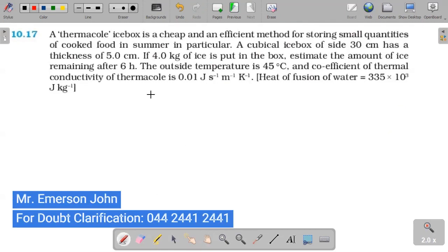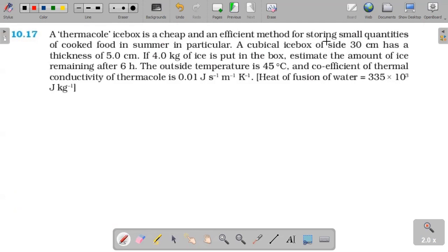Thermocole icebox is a cheap and an efficient method of storing small quantity of cooked food in summer in particular. A cubical icebox outside length of the box 30 cm has a thickness 5 cm and if 4 kg of ice is in the icebox.